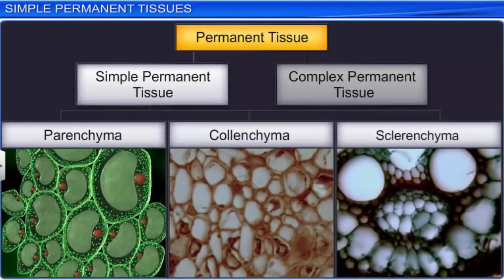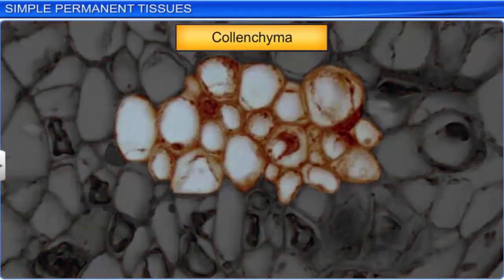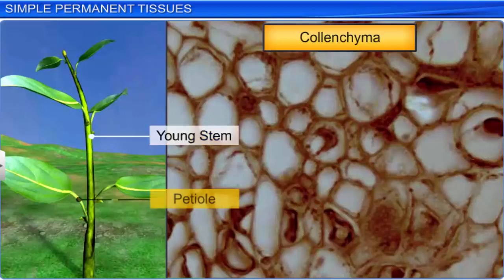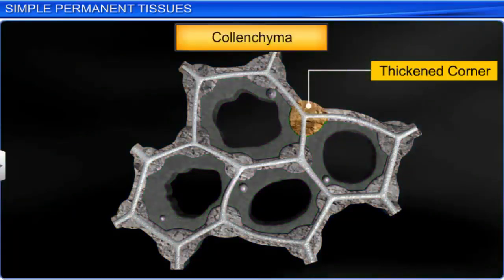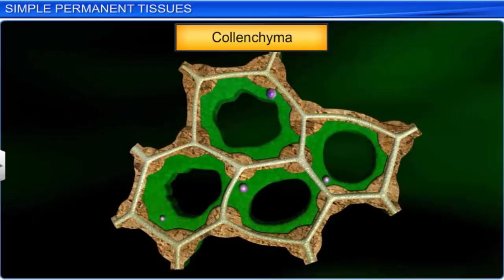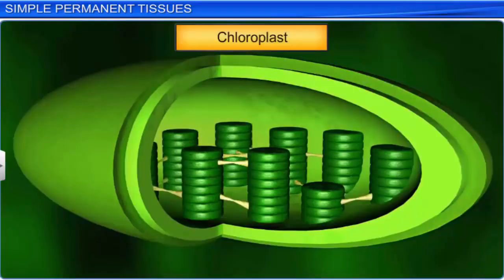The cells of the colenchyma are thick at the corners due to cellulose, hemicellulose, and pectin deposits. They may be oval, spherical, or polygonal in shape, and there is no intercellular space between them. These cells often contain chloroplasts and assimilate food by the photosynthetic process. The third type of simple permanent tissue is sclerenchyma, which consists of long, narrow cells with thick, lignified cell walls. The term sclerenchyma has been derived from the Greek word 'scleros', which means hard.